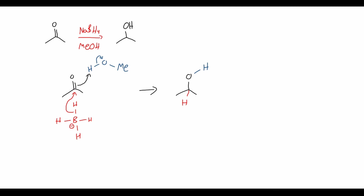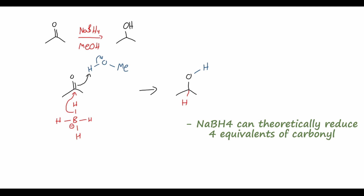Note that because the borohydride anion has four hydrogens, it can theoretically reduce four molecules of carbonyl from just one molecule of borohydride. However, this isn't really how it works in the laboratory — you normally have to use a stoichiometric amount of reducing agent, closer to a one-to-one ratio, because of other effects. Chemistry is usually pretty imperfect in that regard.